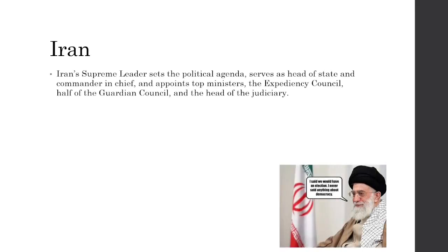Iran's supreme leader sets the political agenda, serves as the head of state, and is the commander-in-chief. They appoint top ministers, the expediency council, half of the guardian council, and the head of judiciary. These are key roles you'll need to note down — we'll go over what each council means.